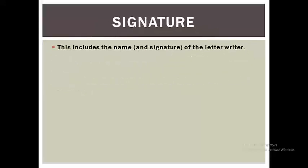The last component of the informal letter is signature. As the name shows, this includes the name or signature of the letter writer. So these six components are all concerned with informal letter writing and are very useful for you to write a letter.